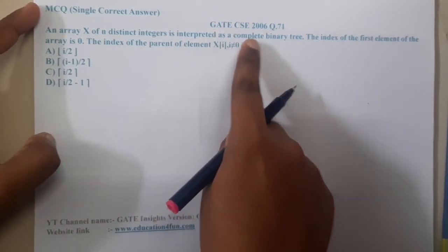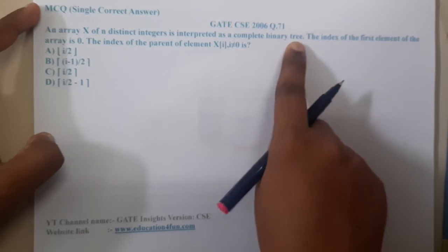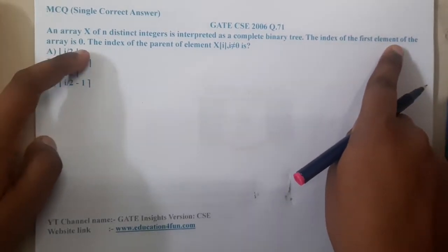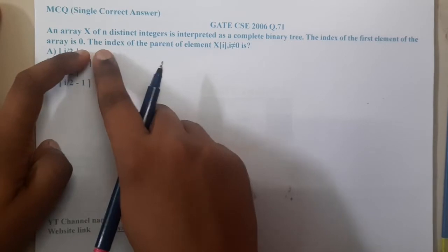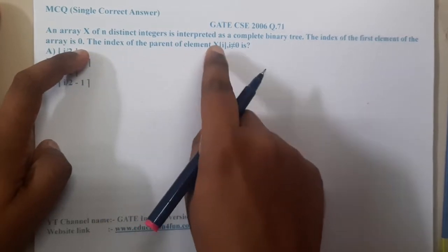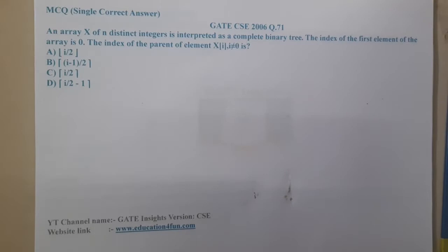The question is: An array X of n distinct integers is interpreted as a complete binary tree. The index of the first element of the array is zero. So the index of a parent of X[i] is equals to question mark.